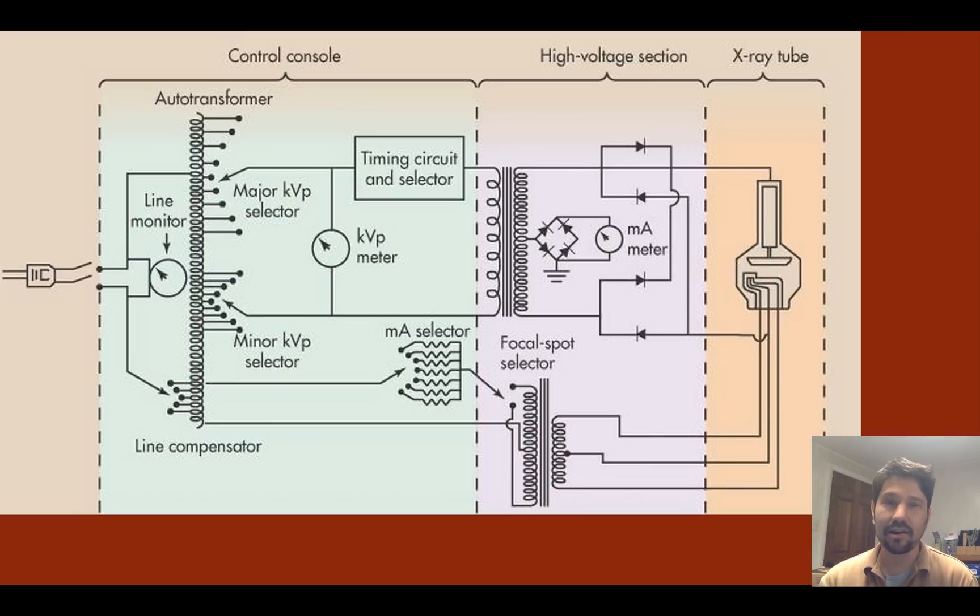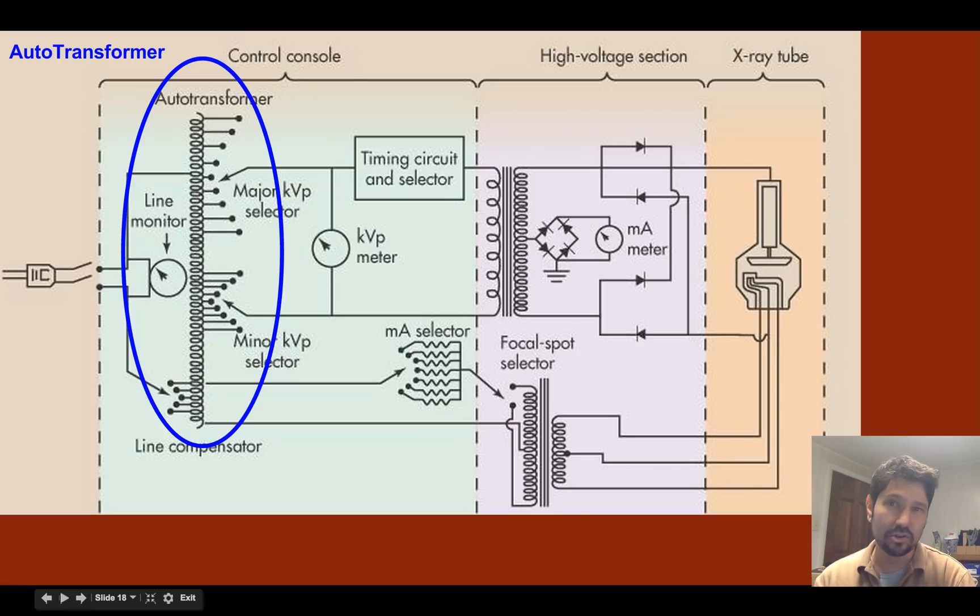If we look at our whole x-ray tube circuit, we have an auto transformer here from which we select our major and minor KVP by picking off what point, what number of coils to tap off of the main one. That's our auto transformer.